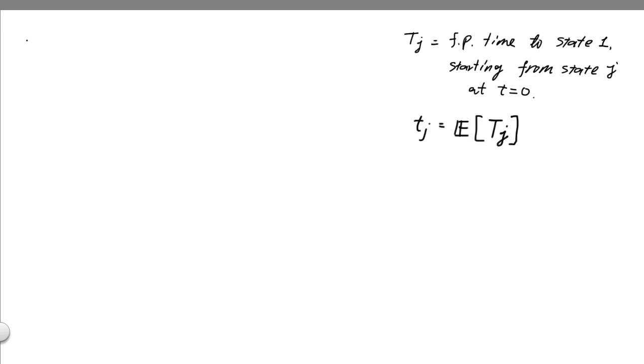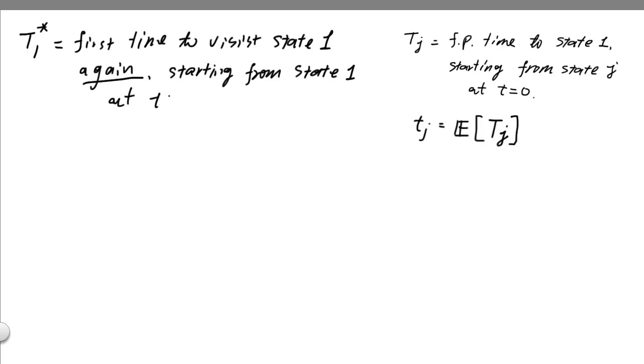And here we're going to define a similar quantity, which is t1 star, defined as the first time to visit state one again. So that's the recurrence part starting from state one at t equals 0. So this is the recurrence time from state one back to state one again.